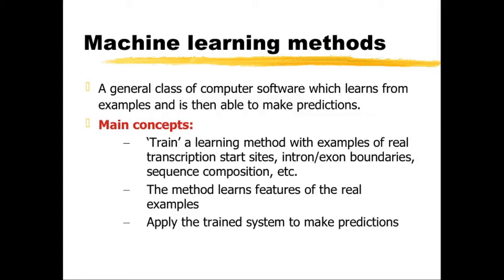Machine learning is a general class of computer software which learns from examples and is then able to make predictions. The main concepts are that we start by training a machine learning method with examples of whatever data we're interested in — for example, transcription start sites, intron-exon boundaries, sequence composition, secondary structure of proteins, and so on. The method then learns features from those real examples, and you can apply the trained system to make predictions.